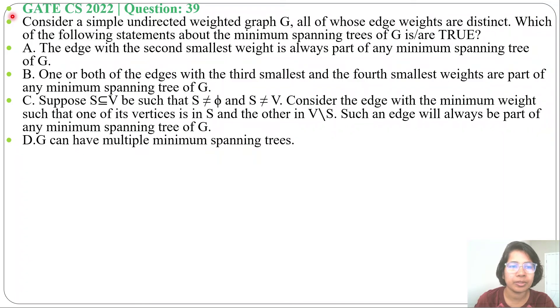Hi, let's have one previous question of greedy technique. This question was asked in GATE CS 2022, question number 39. Consider a simple undirected weighted graph G, all of whose edge weights are distinct. Just mark the word distinct. Which of the following statements about the minimum spanning tree of G is or are true? Four options are given, let's check one by one.